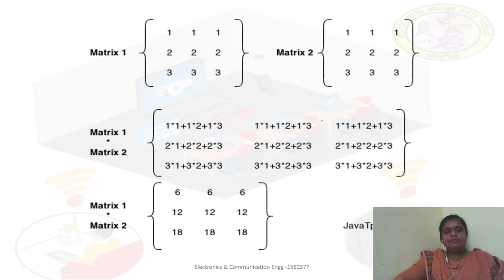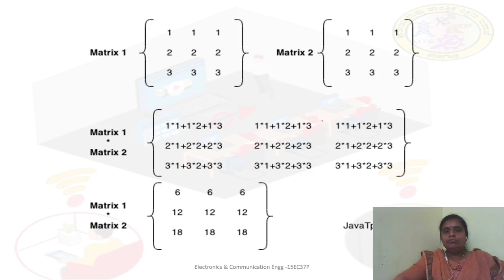The algorithm can be written after understanding the concept of how we go for the multiplication. The multiplication considers the rows and the columns of the matrices. The condition is the number of rows of matrix 1 should be equal to the number of columns of matrix 2, and the number of rows and columns should be more than 0 for both the matrices.